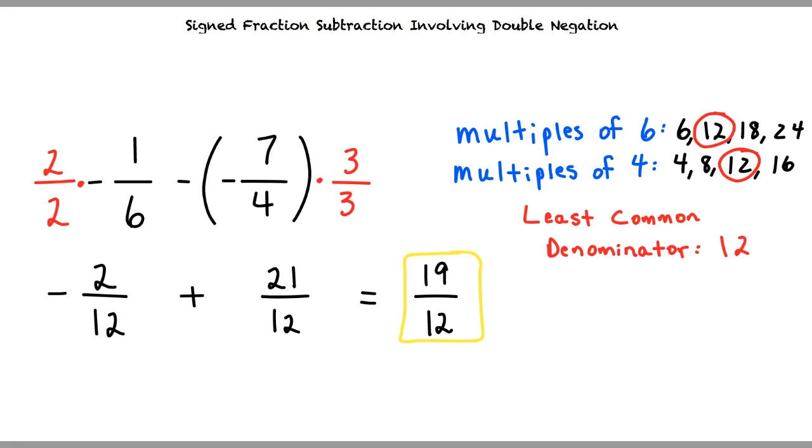Okay. So in order to perform signed fraction subtraction, I must begin by finding the least common denominator. Once I know what the least common denominator is, I must multiply both fractions by a fraction equal to 1 to obtain a common denominator. Finally, I cancel negatives where I can and perform subtraction. Then I have my final answer.